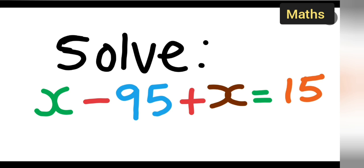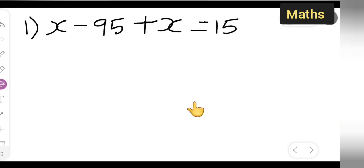Let us see how to find the value of x in this given equation. We need to solve this equation. First, take down x minus 95 plus x equals 15.